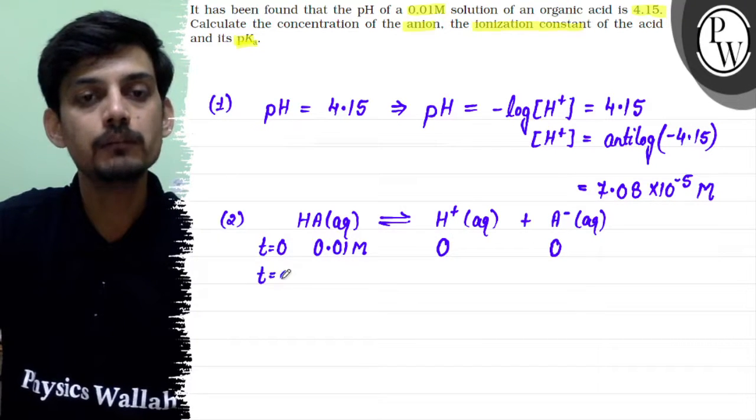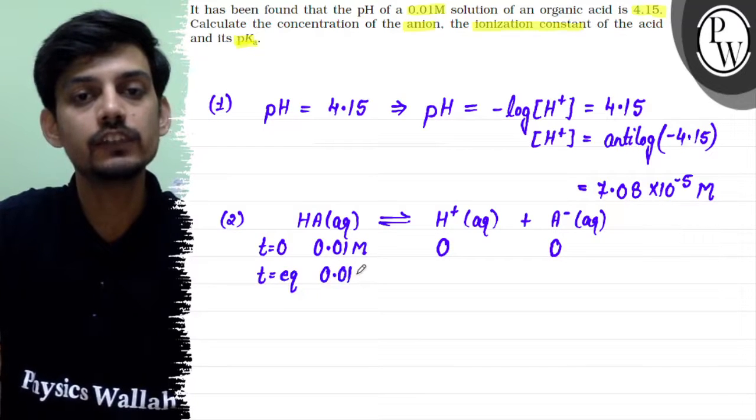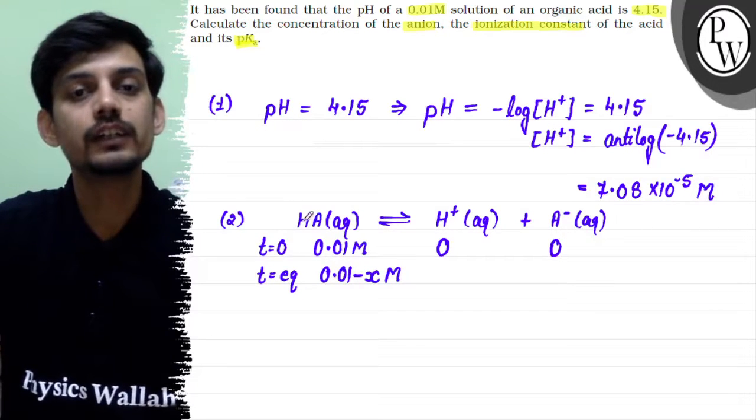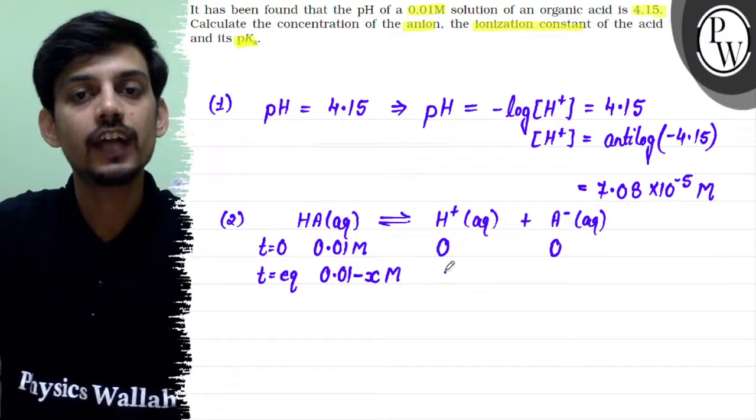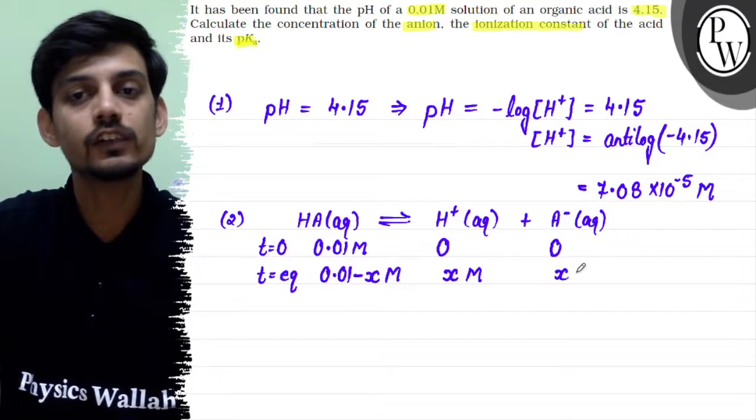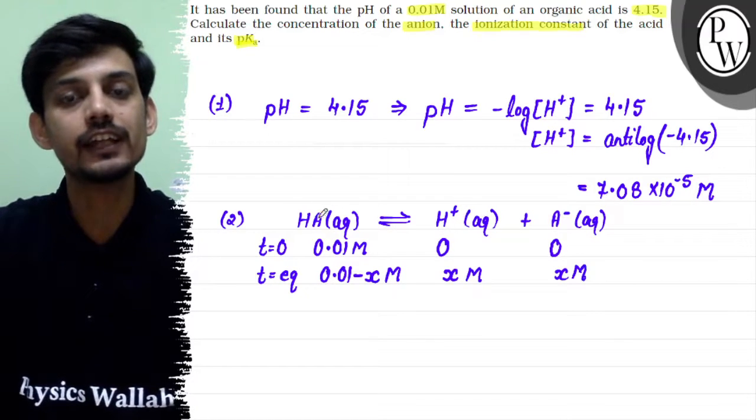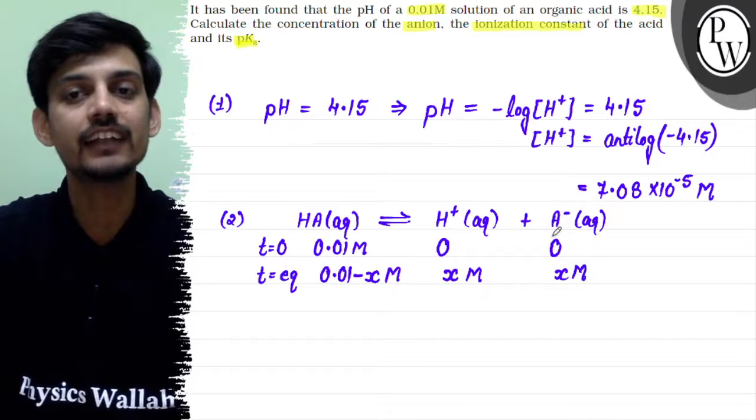Now at equilibrium, if its concentration is 0.01, the amount ionized is consumed by the amount of ionized. If the stoichiometry ratio is 1 to 1, then H plus concentration is also x, and A minus concentration is also x.